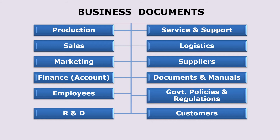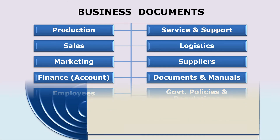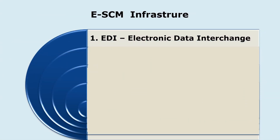Such exchange of business documents can be done in two ways: traditional document exchange, which many organizations avoid, or electronic data interchange (EDI), which is preferred. In EDI, information gets exchanged among all business partners automatically, instantly, without any human intervention, and paperlessly — eliminating errors.